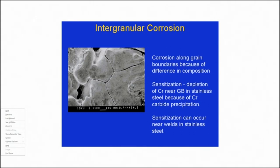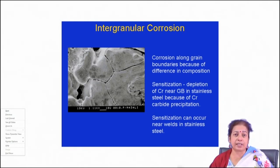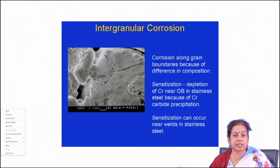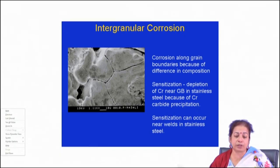In the case of alloys, particularly where grain boundaries consist of different phases with completely different electrochemical behavior from the grains, the corrosion observed is called intergranular corrosion. Because of the presence of a completely different phase along the grain boundaries, there is micro-galvanic cell formation between grain boundary areas and grains, resulting in adjacent grain boundary regions corroding at a much faster rate, eventually leading to component failure.